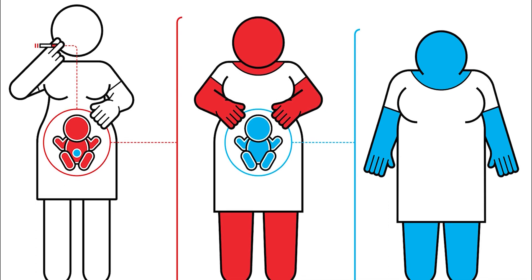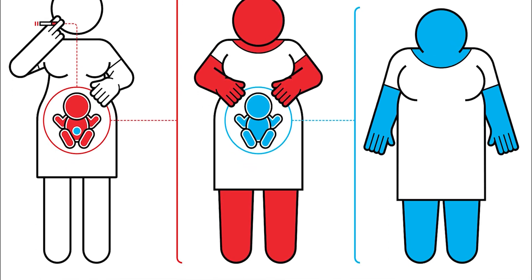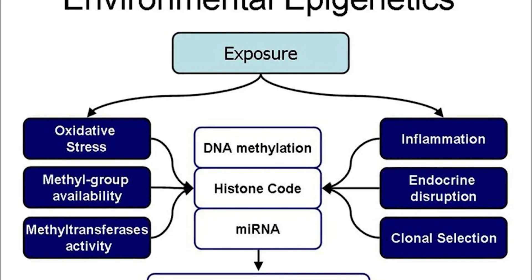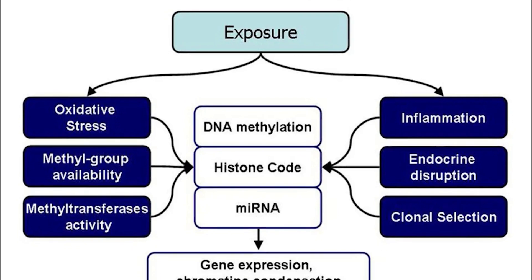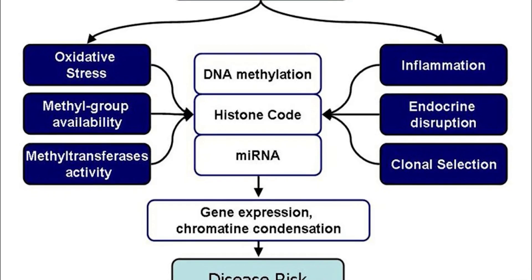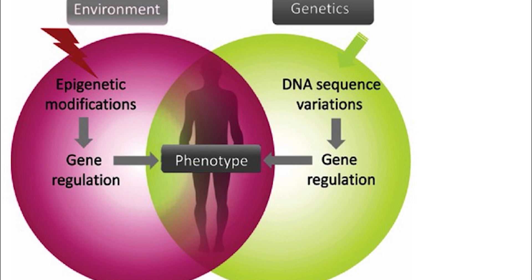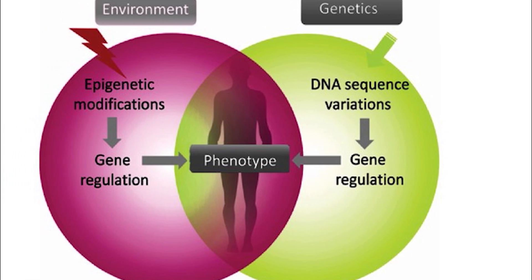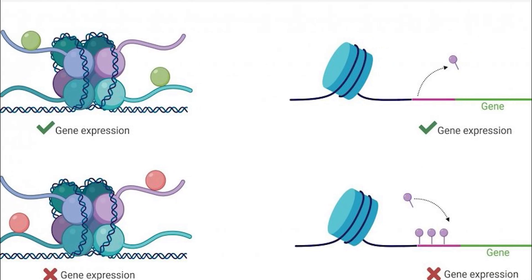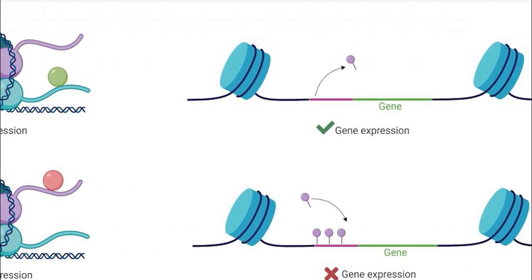Epigenetics refers to changes in gene expression or cellular phenotype that occur without any change to the underlying DNA sequence. These changes are influenced by a variety of environmental and lifestyle factors, including diet, exposure to toxins, and stress. One of the most well-known examples of epigenetics is the phenomenon of methylation, which is the addition of a methyl group to a DNA molecule. Methylation can turn off the expression of a gene, preventing it from being translated into a functional protein.